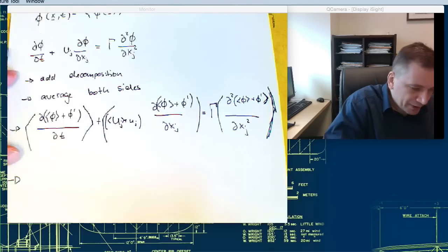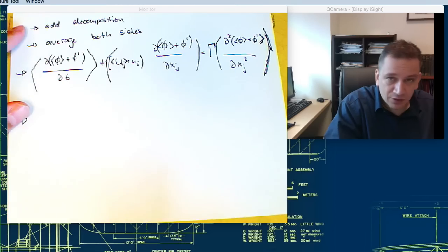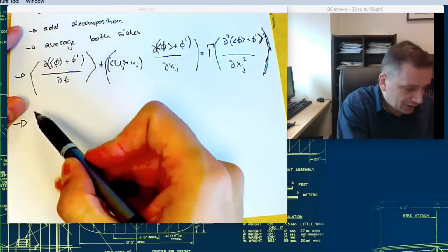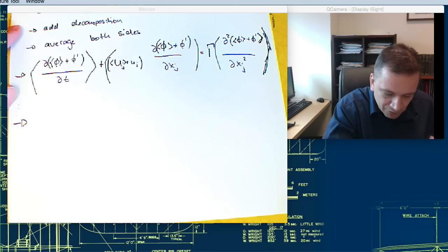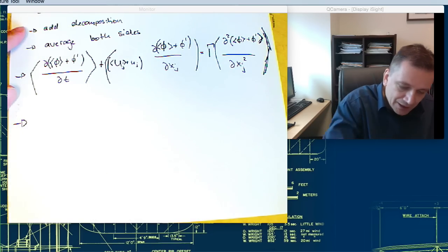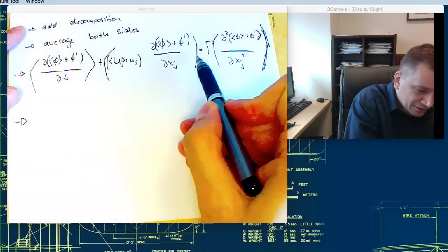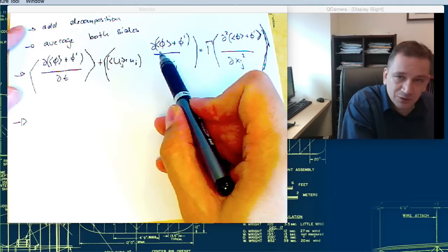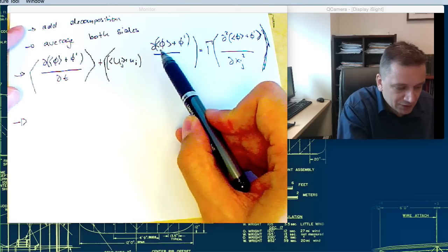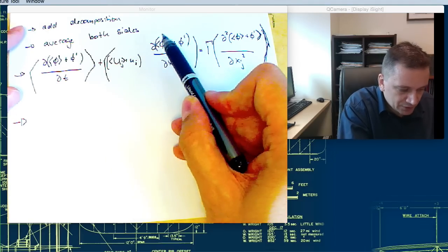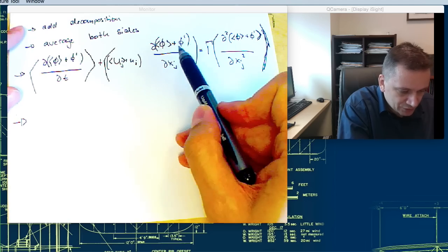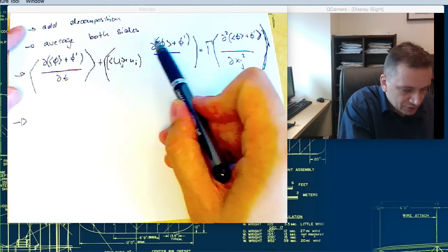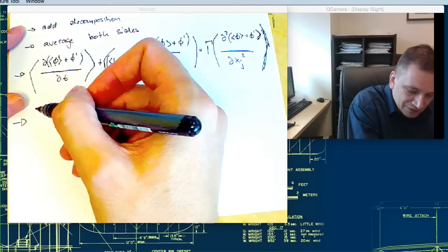If you go back to the derivation of the Reynolds-Navier-Stokes equation, terms like this we have derived already quite a few times. Essentially this is the same thing as we did before except that you have now φ instead of u_j. So it's relatively straightforward,